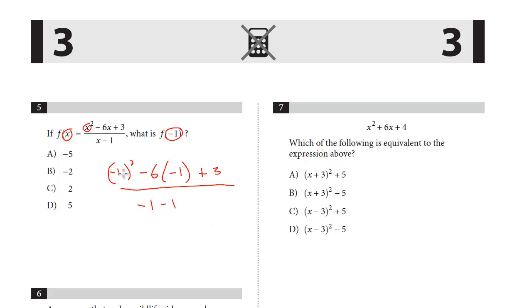And now we just simplify. Negative 1 squared, that is 1. Negative 6 times negative 1, that's plus 6, plus 3. And that's the numerator, so that equals 10. And negative 1 minus 1 is negative 2. 10 divided by negative 2 is negative 5.